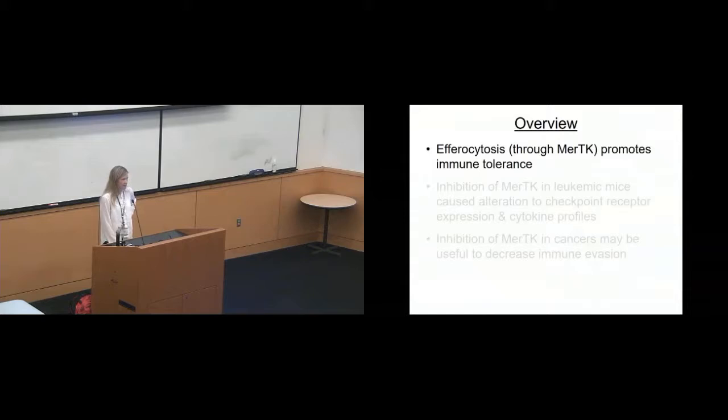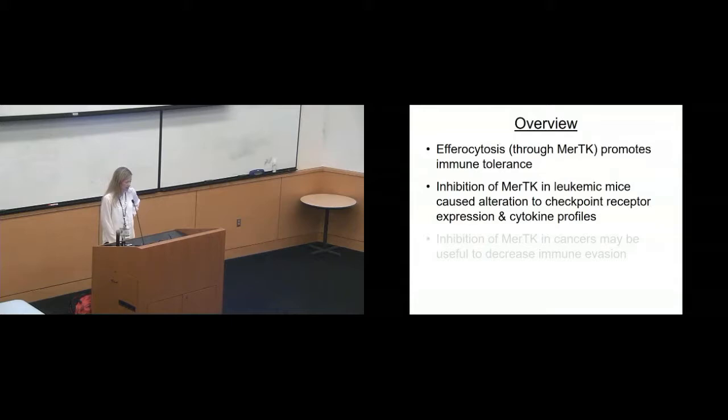So my question in starting my research, leaving my old mentor, starting my new research, is there an antigen-independent process that we can target in acute leukemia to override immunosuppression? And so just as a quick overview, I'm going to take you through what is efferocytosis, and specifically I'll be talking about efferocytosis through a specific tyrosine kinase called MER-TK, and how efferocytosis promotes immune tolerance and therefore helps tumors continue to grow and proliferate. So I'll show you at least some of our research showing that inhibition of MER-TK in leukemic mice has altered checkpoint receptor expression and cytokine profiles. And then further inhibition of MER-TK in cancers, more generally, may be useful to decrease immune evasion.